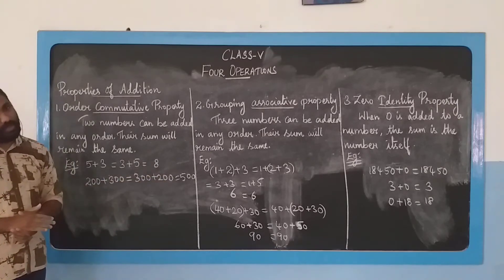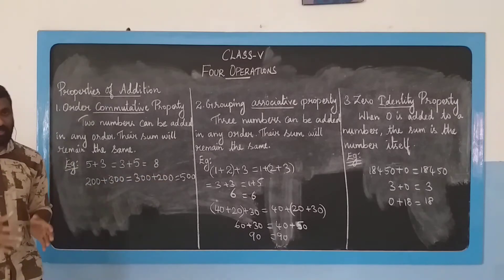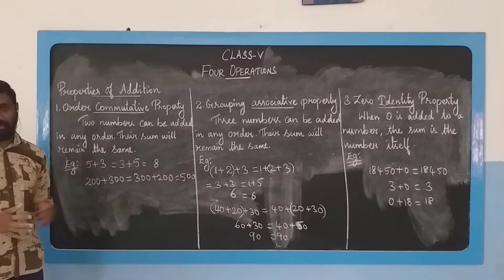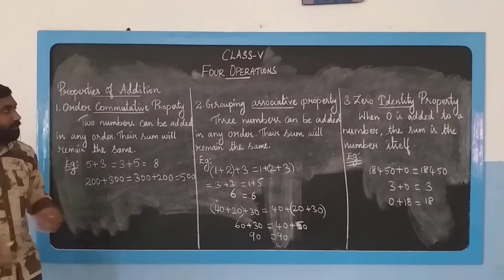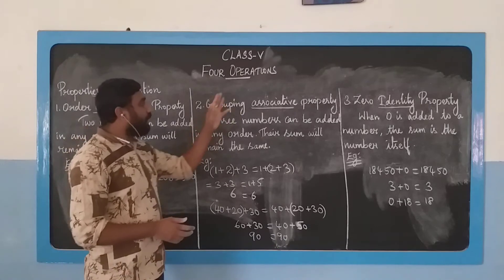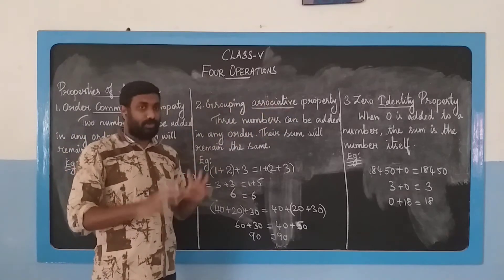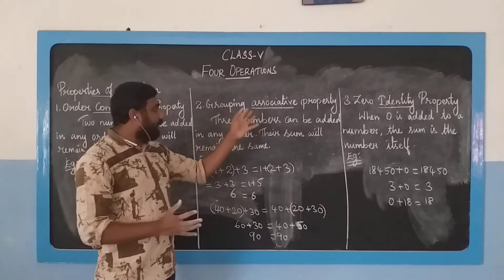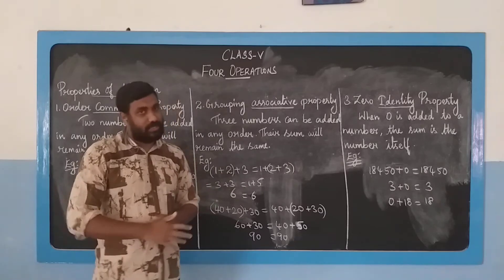That is the first property. The second property is the associative property. Grouping will be compact and that property is the associative property.